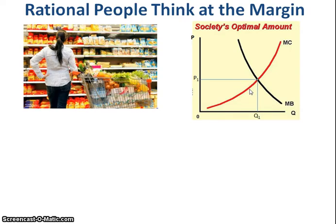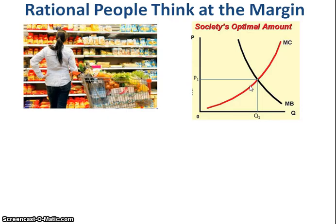People make decisions by comparing the costs and benefits at the margin with each additional unit. A rational person will purchase more if the additional benefit is greater than the additional cost. It doesn't make sense to purchase more when the additional cost is greater than the additional benefit.